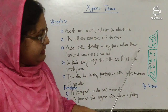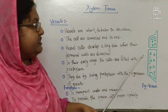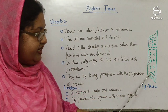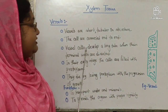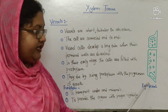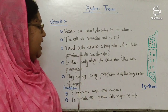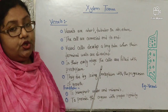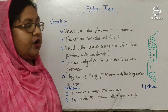Now, vessel. The characteristics of vessel: vessels are short and tubular in structure. The cells are connected end to end — this end is connected with the next end, forming a tube or channel-like structure. Vessel cells develop a long tube when their terminal walls are dissolved. In their early stages, the cells are filled with protoplasm, but the cells die by losing their protoplasm with the progression of growth. The function of vessel: to transport water and minerals and to provide organs with proper rigidity.